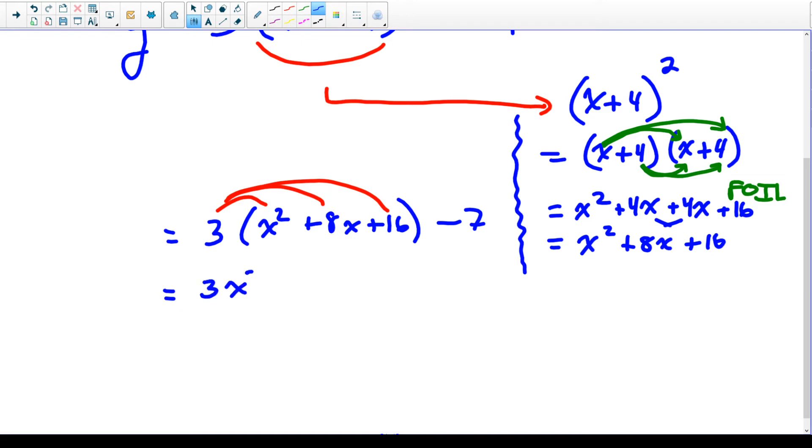So 3 times x squared is 3x squared, 3 times 8x is 24x, and 3 times 16 is 48. And then we've got the minus 7 that's still there. And we're going to combine those two terms which are now like terms. So we've got 3x squared plus 24x plus 41. And that is our final answer.